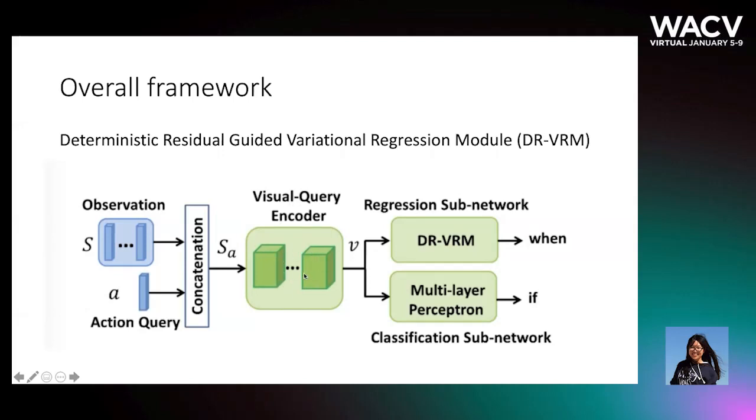The output feature vector is then fed to two subnetworks. One is the classification subnetwork to output if the action query will happen or not in the future. Another subnetwork is the regression subnetwork to output the starting moment of the action query in the future.